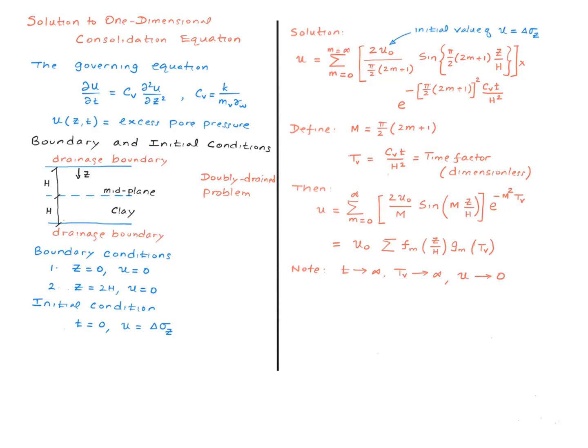Also, it's very easy to see that the solution satisfies the boundary condition, in that when z equals zero, we know the sine function is zero, and therefore the excess pore water pressure is zero. So on this drainage boundary, the excess pore water pressure is zero. And similarly, if I put z equals two h, it can be easily shown that this function again is zero, and therefore the excess pore pressure is zero at the bottom drainage boundary.